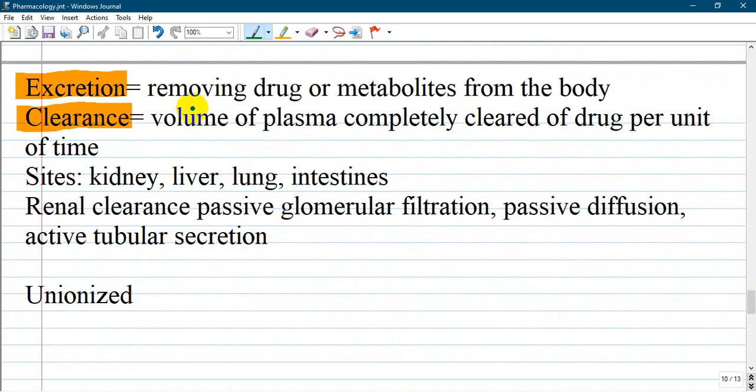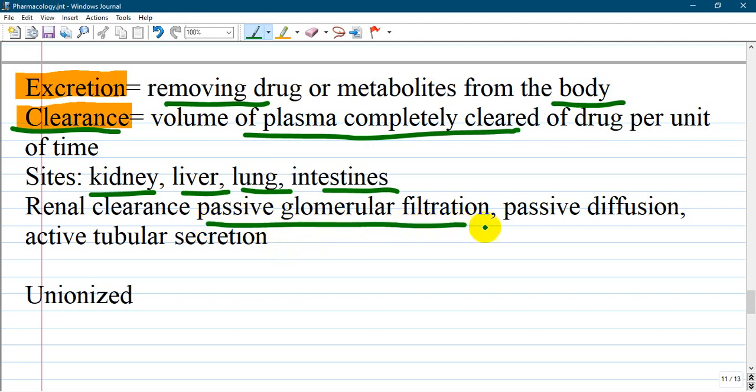Excretion by definition is removing drug or metabolites from the body. Clearance is a volume of plasma completely cleared of drug per unit time. Clearance is clearing from plasma while excretion is removing from body. Main sites - kidney, liver, lung, and intestines. Renal clearance occurs in many ways like passive glomerular filtration, passive diffusion, active tubular secretion.